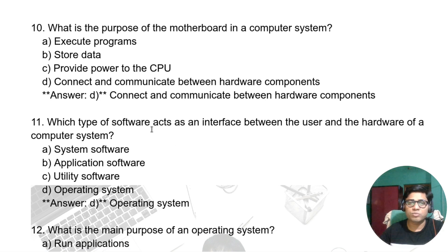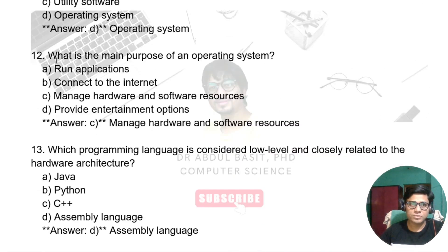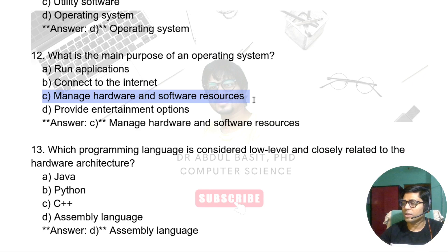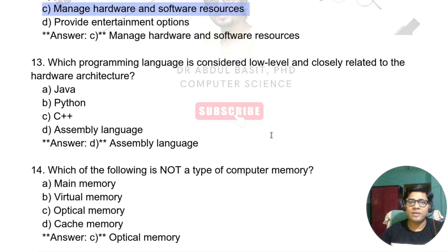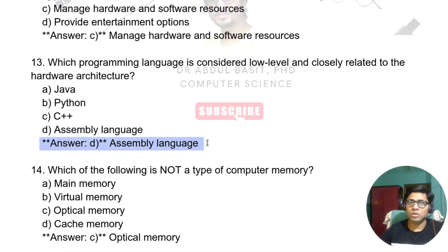Which type of software acts as an interface between the user and the hardware of the computer system? Obviously, the operating system. What is the main purpose of the operating system? Its main purpose is to manage hardware and software resources. Which programming language is considered low-level and closely related to hardware architecture? Assembly language — it is a completely low-level language, unlike Python, C++, or Java.